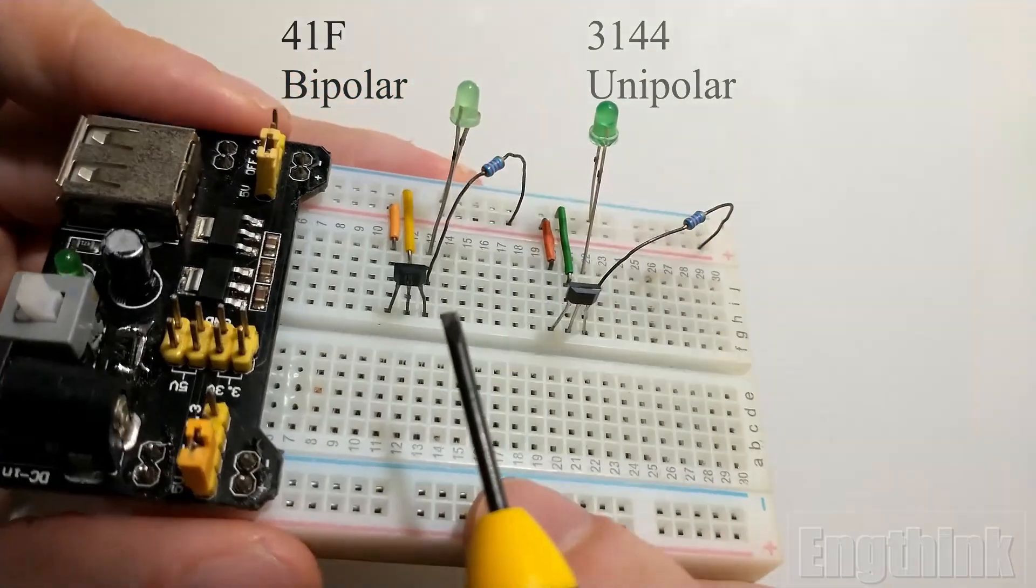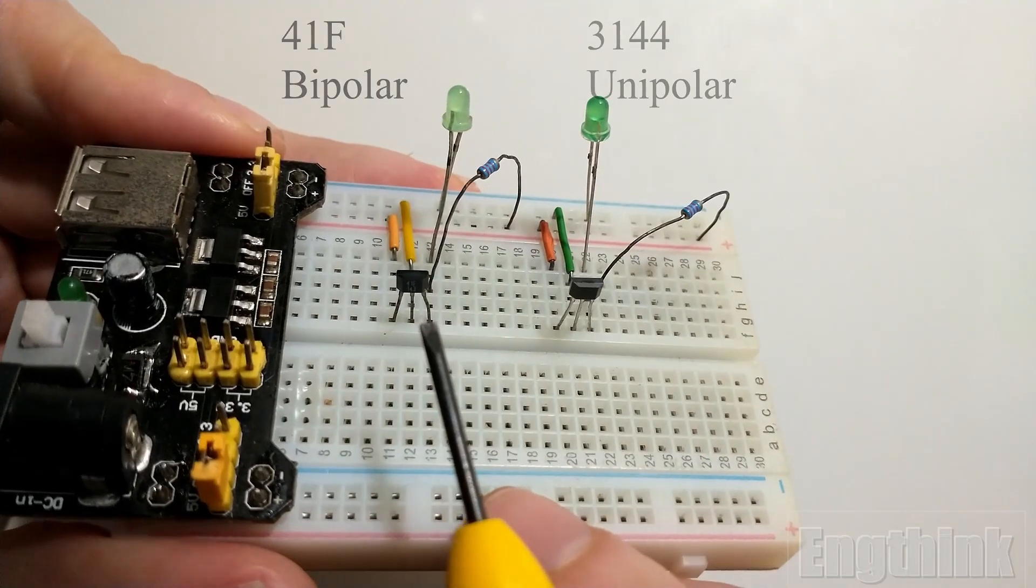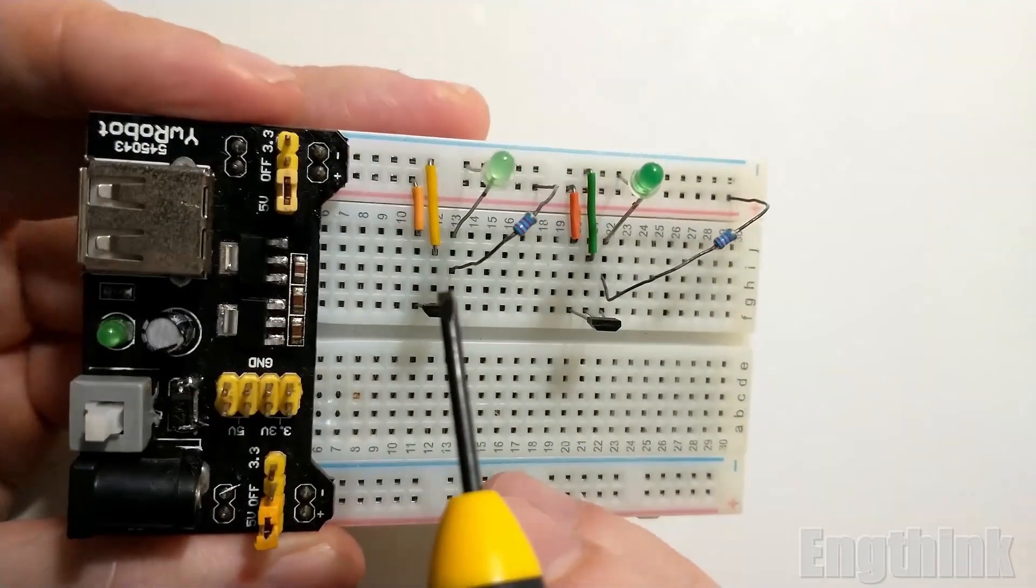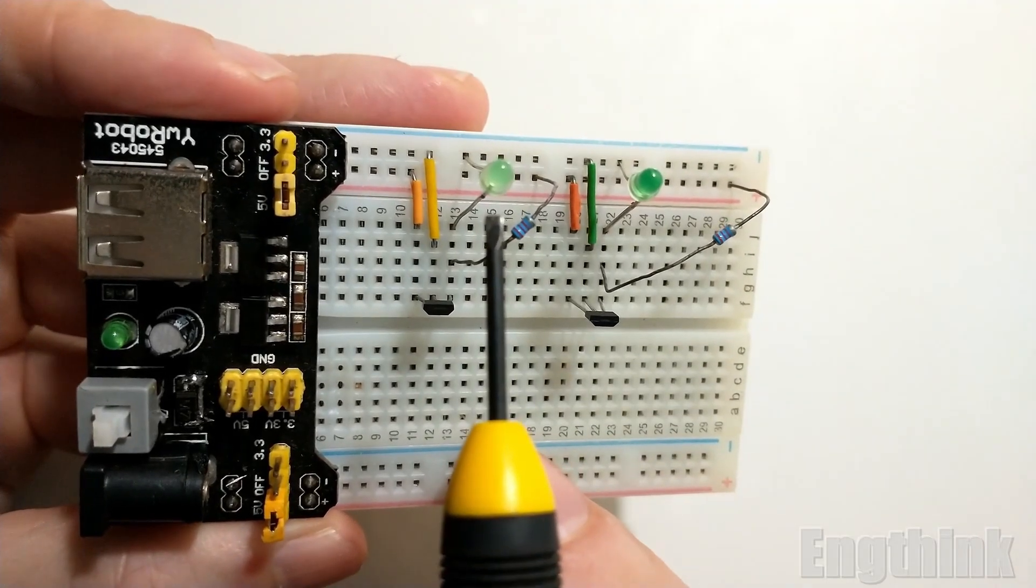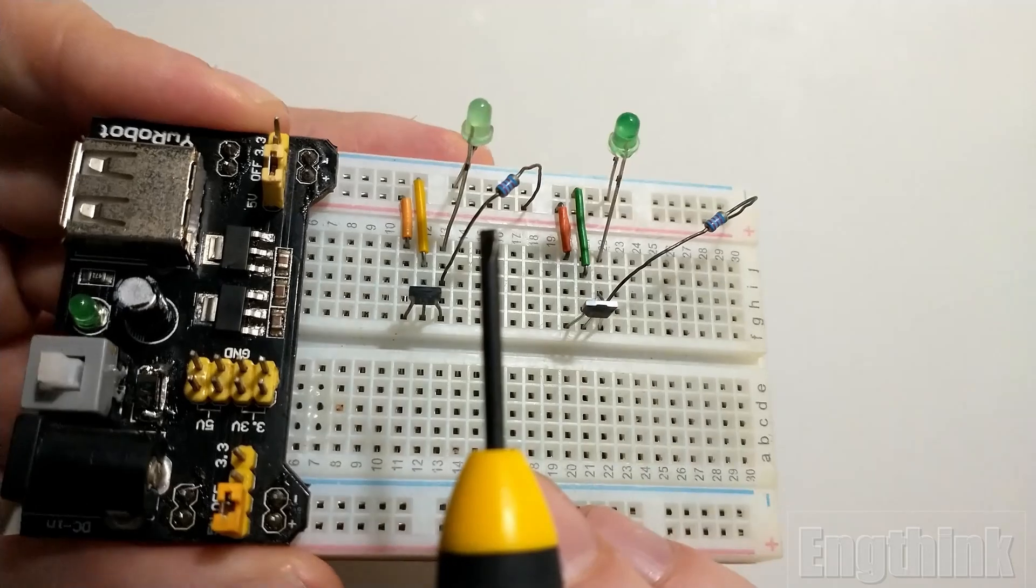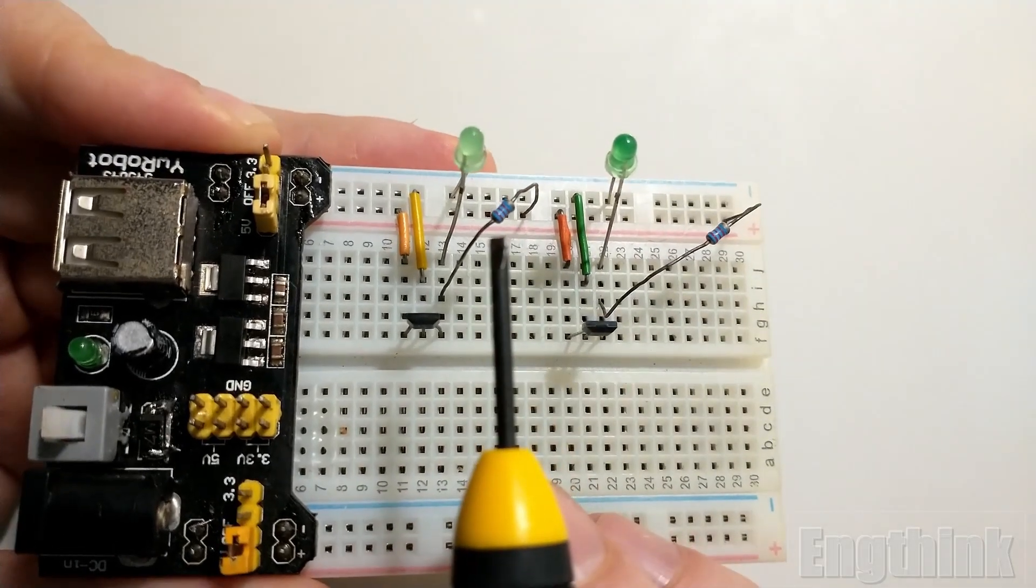Just to emphasize, on the left side I have the bipolar model with the code 41F, and on the right side I have the unipolar model with the code 3144.